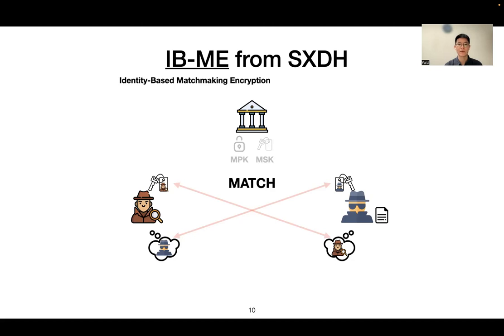This is identity-based matchmaking encryption, where both the sender and the receiver with their own attributes can specify fine-grained access policies the other party must satisfy in order for the message to be received.